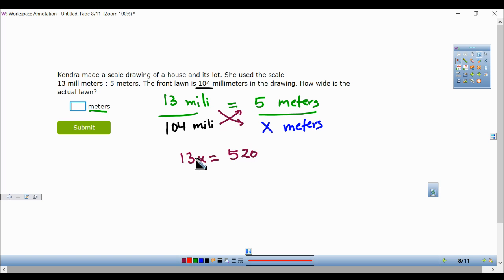My next step is I want to get x by itself. That's what I want to find out. So in order to get x by itself, since I'm multiplying 13 times x, I want to do the opposite. The opposite of multiplication is division. So 13 is on the bottom.